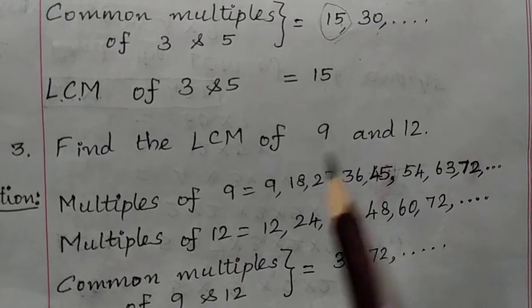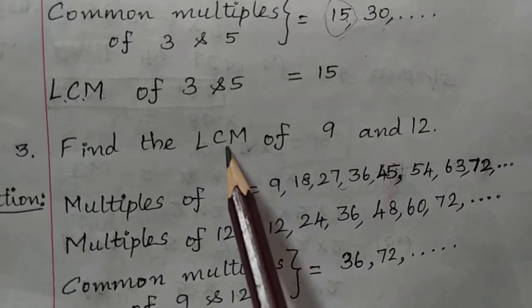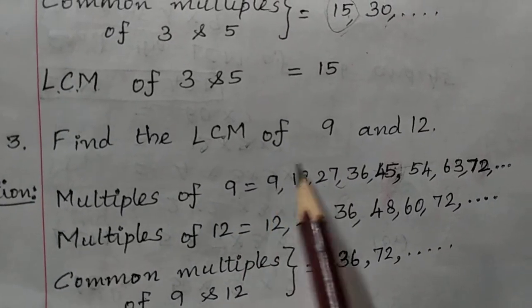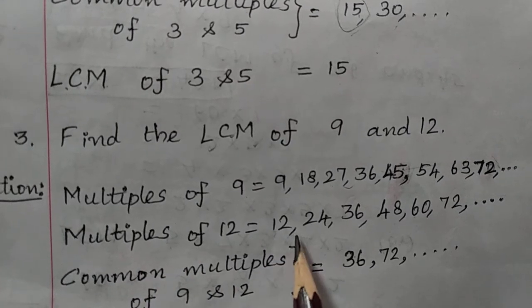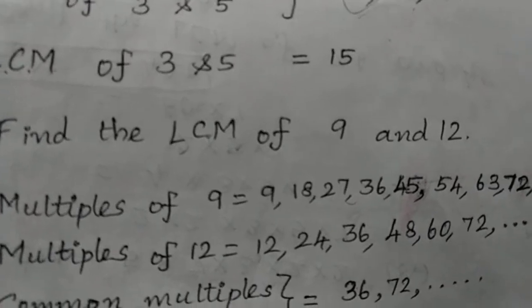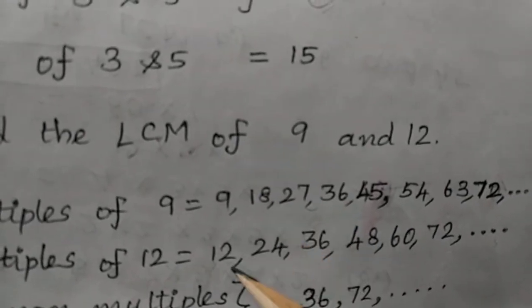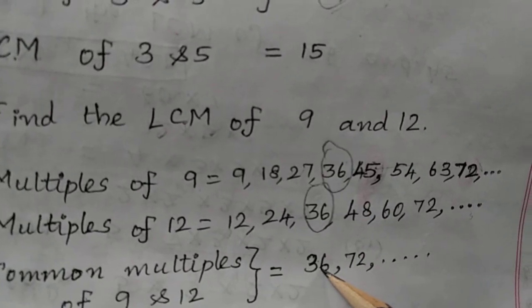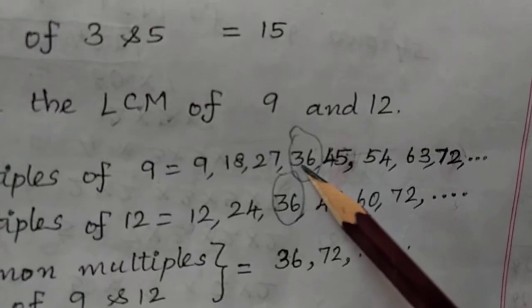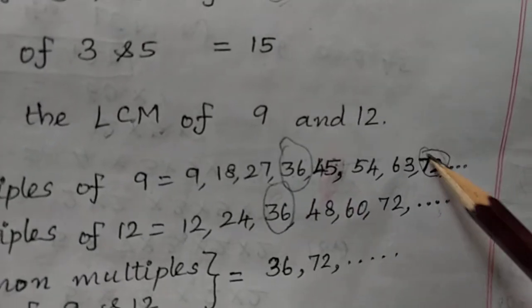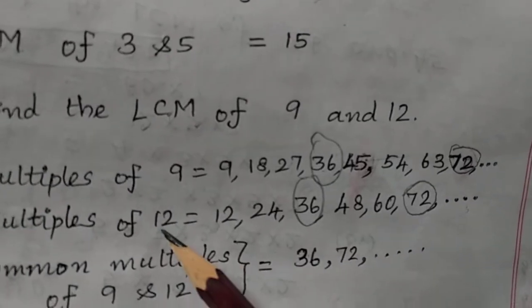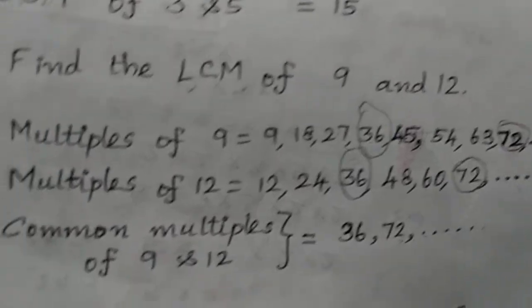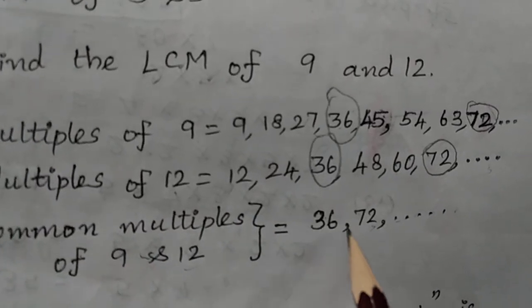Find the LCM of 9 and 12. First find multiples of 9 and 12, then common multiples, then the least value. Multiples of 9 start with 9, increasing by 9. Multiples of 12 start with 12, increasing by 12. 36 is the first common multiple of 9 and 12. The next one is 36 plus 36 = 72. 72 is a multiple of both 9 and 12. Common multiples of 9 and 12 start with 36 and increase by 36.